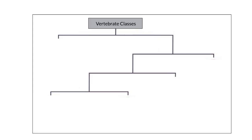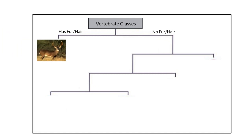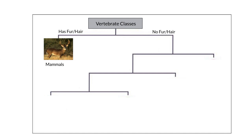One way to learn how to use a dichotomous key is to construct a basic one, such as this dichotomous key on vertebrate classes — animals with backbones. There are five major groups or classes. We begin by asking: does this animal have fur or hair? If it does have fur or hair, it would be something like a deer, moose, bear, or cougar — we call these animals mammals.